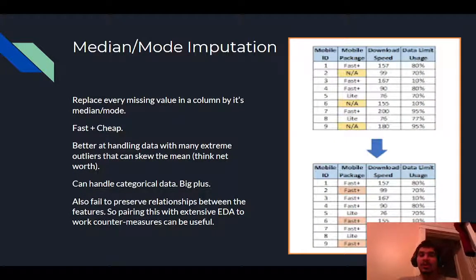The second is median or mode imputation, which is basically similar to the mean imputation, but instead of replacing a missing value in the column by its mean, we're replacing it with either the median or the mode. This is also really fast and cheap. And in cases where we have very extreme outliers that can skew the mean, this kind of method will work better. The very overused example is the case of LeBron James' class, because James himself earned so much money that he will kind of skew the mean of your net worth to the right. But a much better understanding of the central tendency might be the median or the mode.